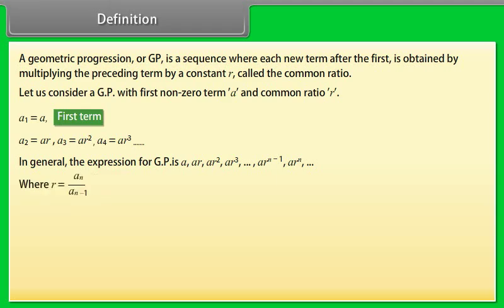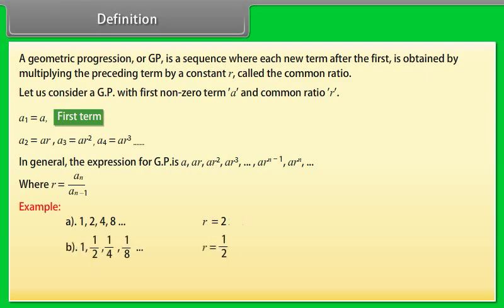Where R = Aₙ / Aₙ₋₁. Example: 1, 2, 4, 8, and so on — R = 2. Another example: 1, 1/2, 1/4, 1/8, and so on — R = 1/2. Another example: 1/4, -1/2, 1, -2, 4, and so on — R = -2.